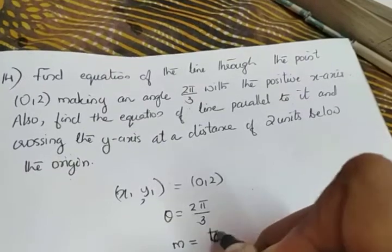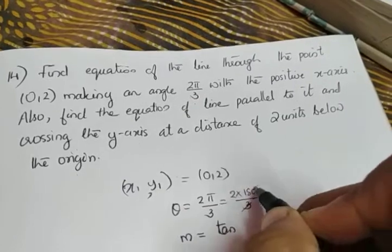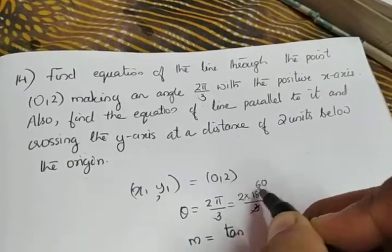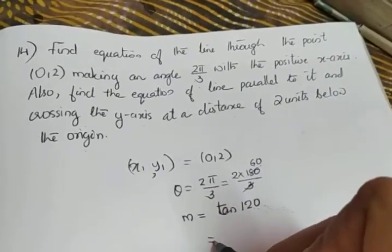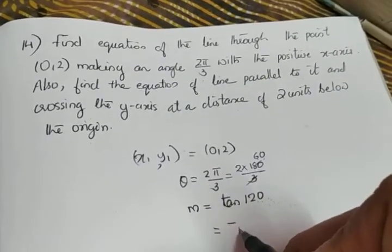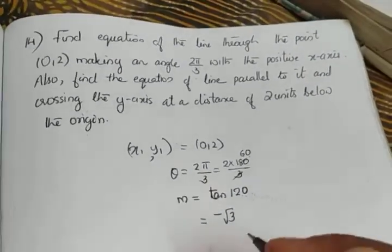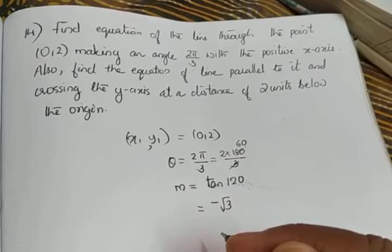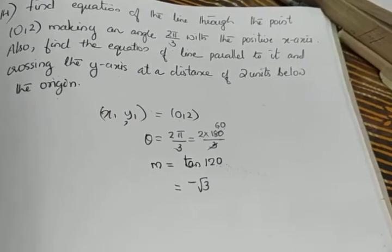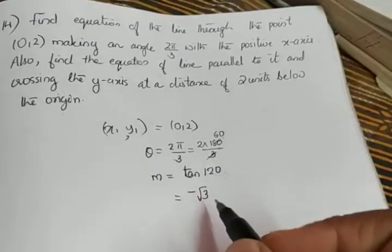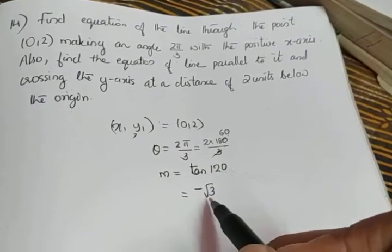The slope is tan(2π/3). Now, 2π/3 equals 2×180/3 = 120°. So slope m = tan(120°), which equals −√3, as studied in trigonometry. We can write 120° as 90° + 30°, which is an odd function, so we take the co-function cot(30°). Since 120° is in the second quadrant, the value is −√3.